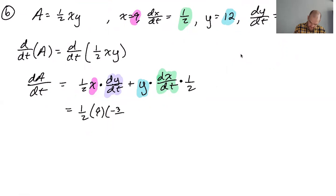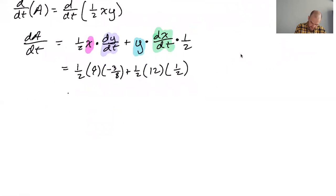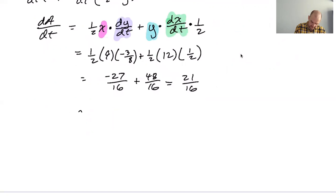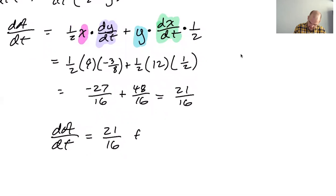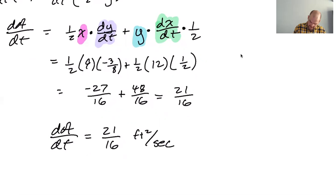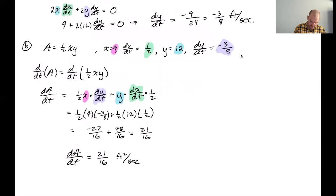Nine negative three eighths plus one half twelve one half. What do we got here? Negative 27 over 16 plus 12 over 4 plus 3, which is 48 over 16, which is 21 over 16. So I think dA/dt or the rate of change of the area of the triangle is 21 over 16. X and Y are both in feet. So feet squared and time is in seconds. So that I would say is my answer to B.